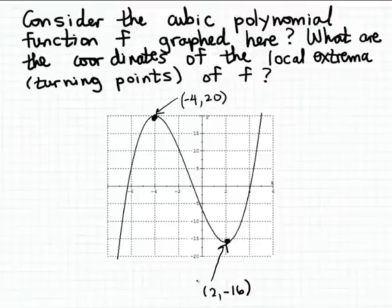So the turning points on the graph of this function are approximately minus 4 and 20 and 2 and minus 16. These are the local extreme points for the function f.